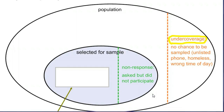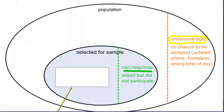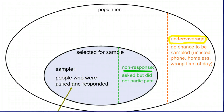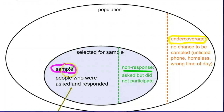We asked them to be in the sample, we said take our survey, and they said they're not interested. Or we called them on the phone, they didn't pick up, and they still didn't pick up when we called back. Non-response are the people we wanted to be in our sample — they were part of our simple random sample (SRS) — but they did not respond. Of the people we actually talked to, that is our sample. So it's not who we asked to be in our sample; it's the people we actually talked to that we call the sample — they were asked and they responded.